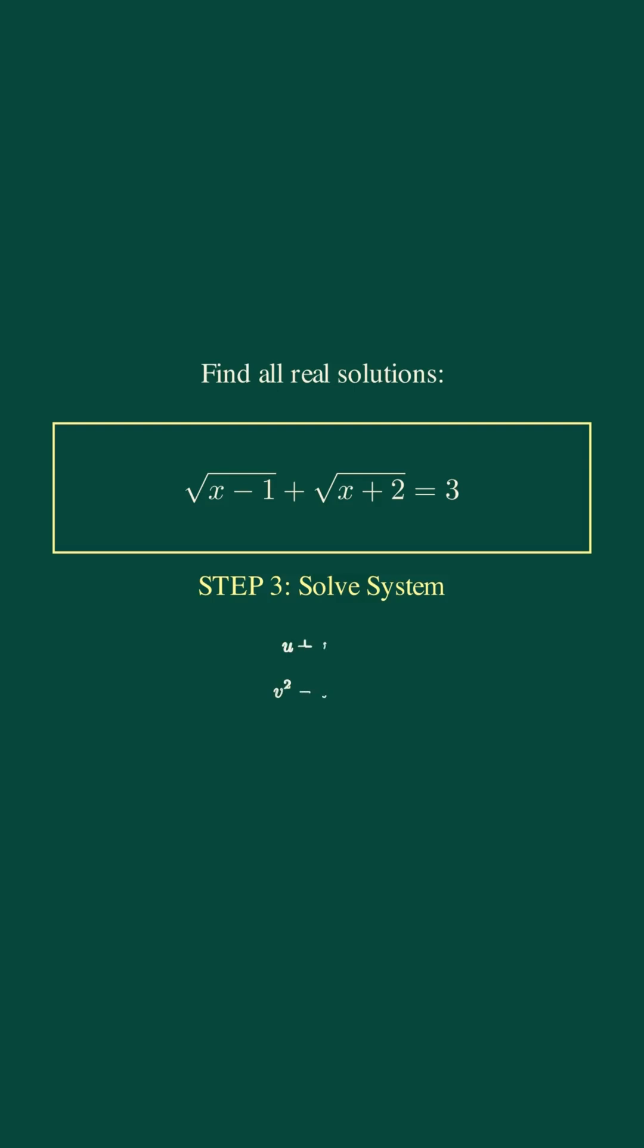plus v equals 3 and v squared minus u squared equals 3. Using difference of squares: v minus u times v plus u equals 3. Since v plus u equals 3, we get v minus u equals 1. Solving the